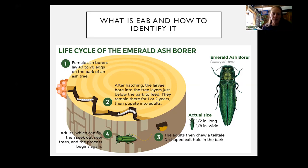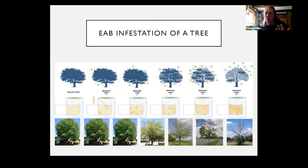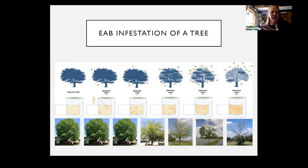The way it kills trees is by boring into the trees. It begins with a small infestation, usually in the upper canopy, and the larvae are essentially girdling the tree by eating the cambium layer — that layer that transports water and nutrients just under the bark. As the population increases, it girdles the tree more and more, and you begin to see more symptoms of a stressed tree, and eventually it kills it.